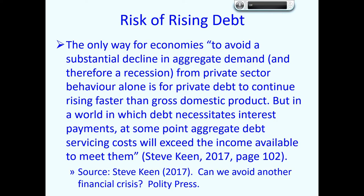To finish the first part of the lecture, I would like to finish with a statement by Steve Keen in his book 'Can We Avoid Another Financial Crisis?' He said: 'The only way for economies to avoid a substantial decline in aggregate demand, and therefore a recession, from private sector behaviour alone, is for private debt to continue rising faster than gross domestic product. But in a world in which debt necessitates interest payments, at some point aggregate debt servicing costs will exceed the incomes available to meet them.'